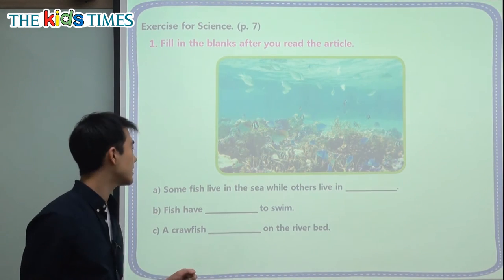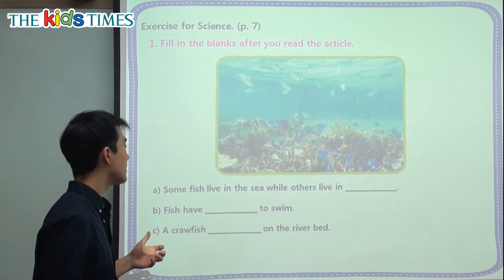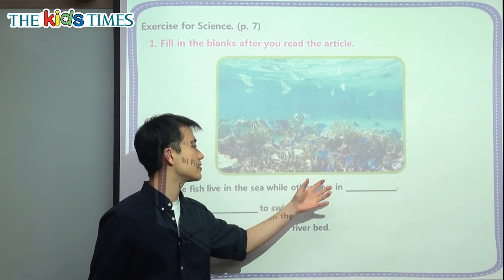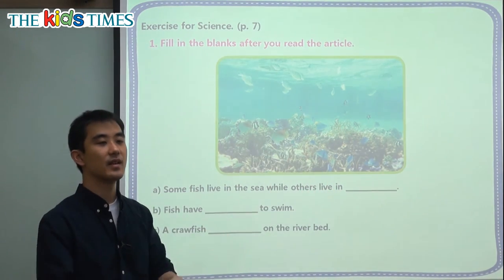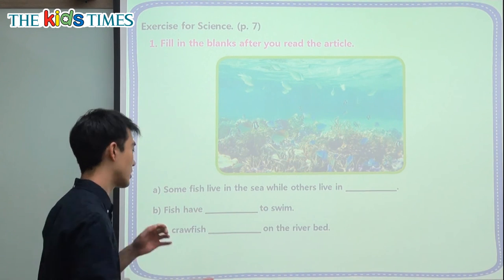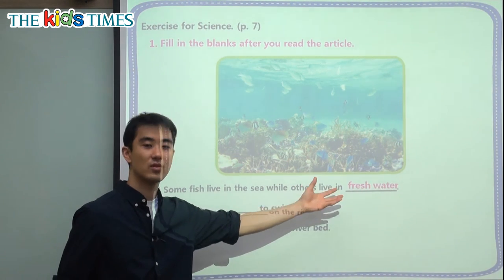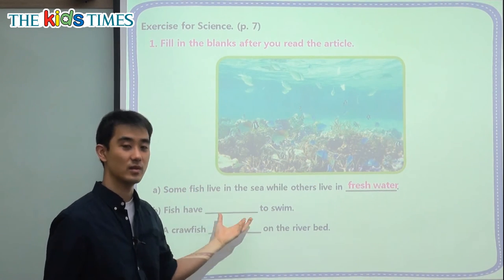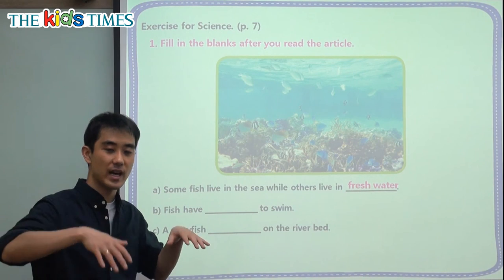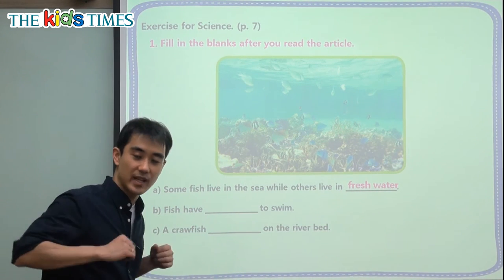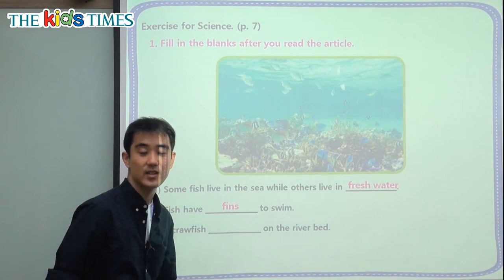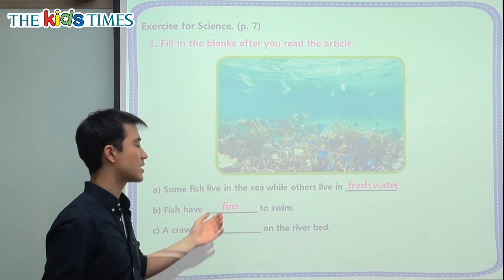We have three key questions here. A: Some fish live in the sea — 어떤 물고기들은 바다에서 산다 — while other fish live in water that we can drink, in the rivers, 강, or in the lakes, 호수. We say that is fresh water — 민물 물고기 and sea water fish. B: Fish have blanks to swim. Different from people who have arms and legs, fish have something called fins. Fins are on the sides and tail and help them swim — just like mermaids.